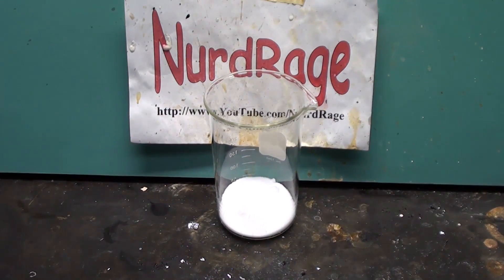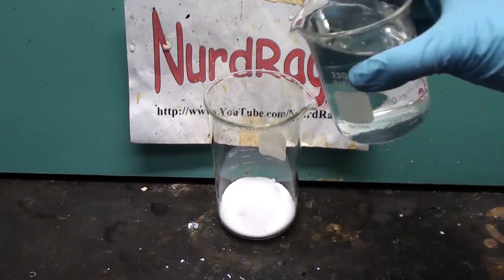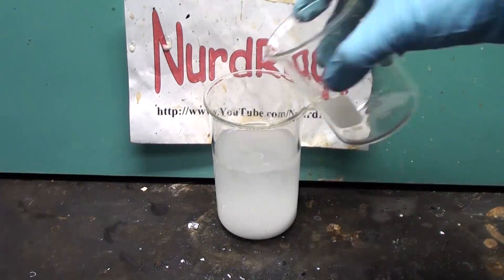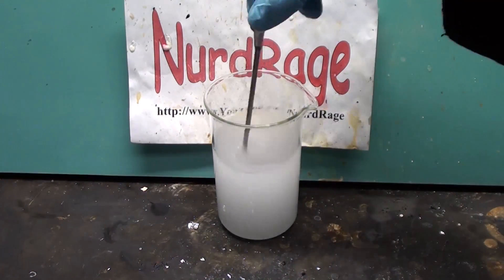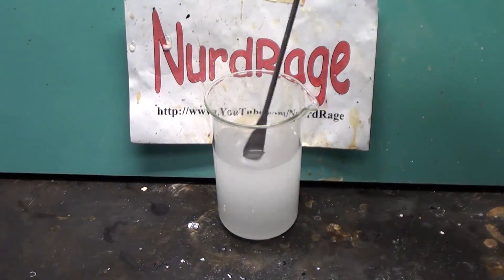We start with about 60g of table salt and add in 300mL of water. Stir it up until most of it dissolves. If it doesn't completely dissolve, that's fine.